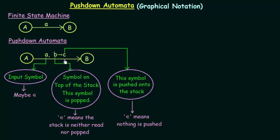The third symbol C represents the symbol that is pushed onto the stack — inserted into the stack. This can also be epsilon, which means nothing is pushed onto the stack. So if you see an epsilon in this position, nothing is pushed. These are the meanings of the three symbols in our pushdown automata notation.